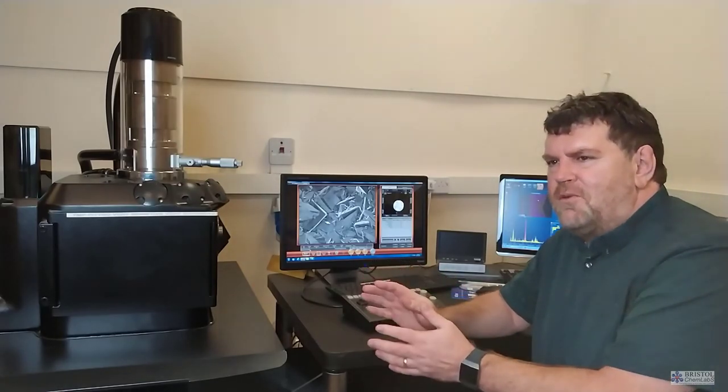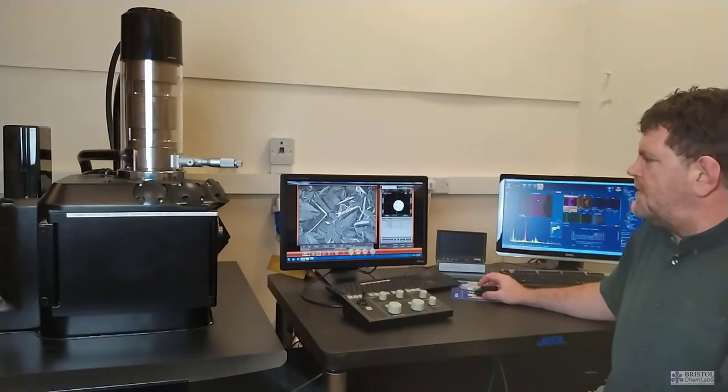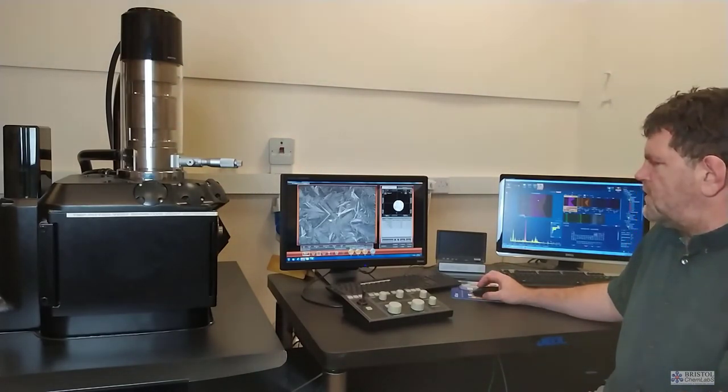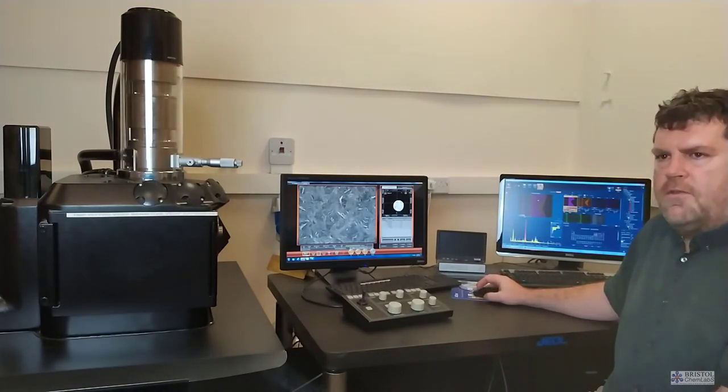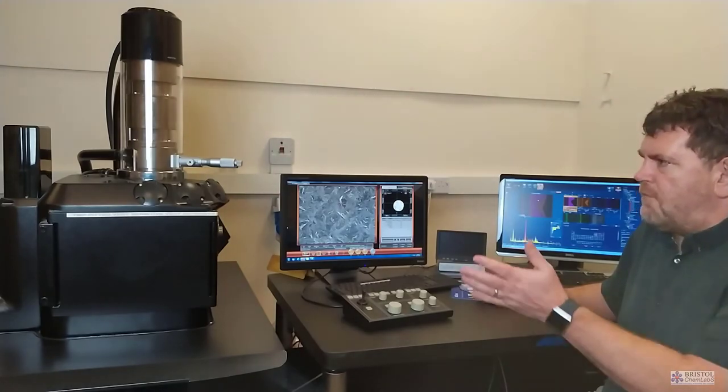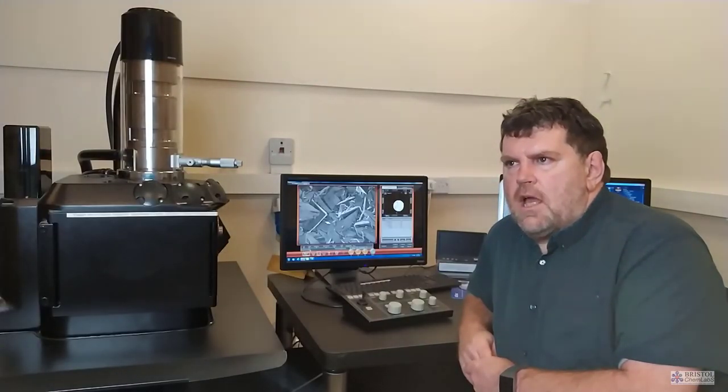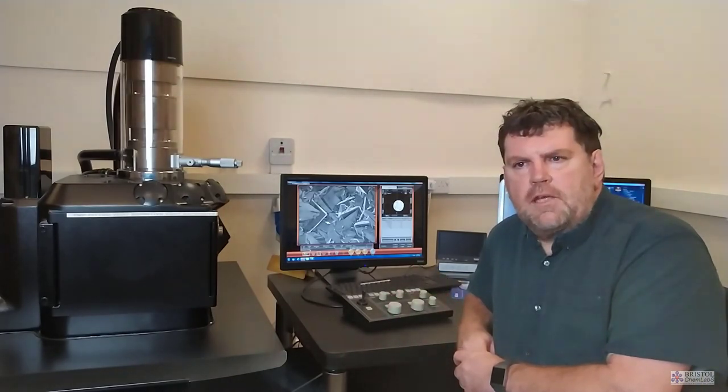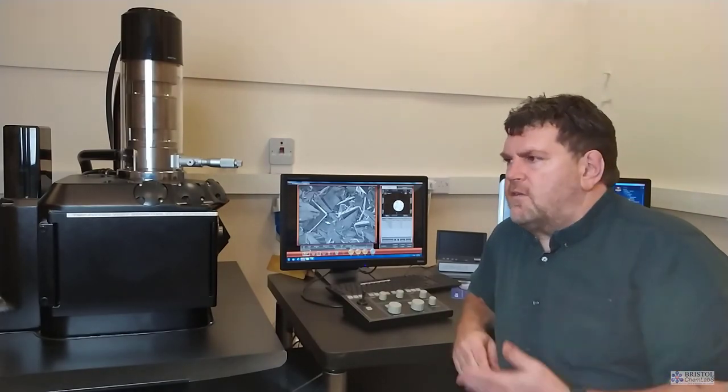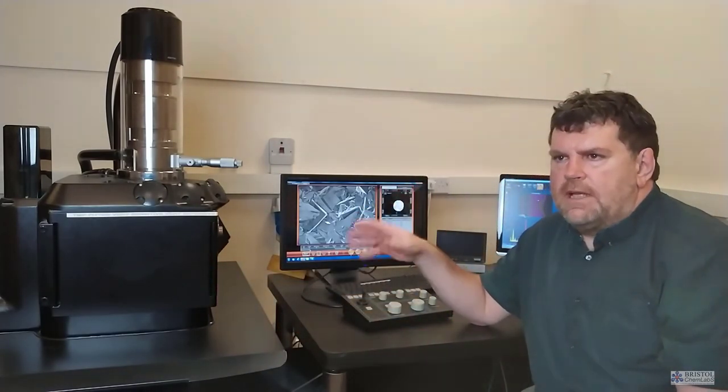Once the sample's safely in the column and evacuated, there's no damage you can do to the instrument. Everything else is really just an interface with a screen, and there are multiple ways of interacting. Using a mouse, you can zoom in, zoom out, drag and move the sample around. There really is very little training needed apart from being able to safely load and unload samples. For the scanning electron microscope, it's literally a couple of hours to get the first introduction. The only damage that can be done to the electron microscope is in loading and unloading. That's where there can be mechanical damage to the electron microscope, to the lenses, to the apertures.